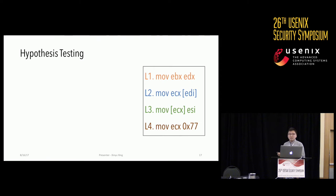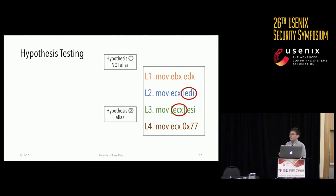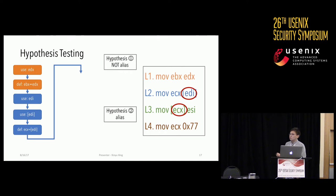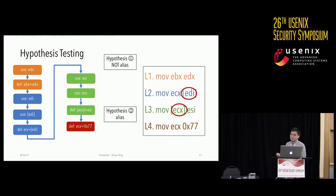Let's look at the hypothesis test in detail. We make two hypotheses about whether EDI and ECX are aliases. After building use-def chains from each instruction — extracting definitions and uses of EDX, EDI, memory cells indicated by EDI, ECX, ESI — under the first hypothesis (not aliases), the use of memory indicated by EDI can reach instruction L4 without blocking, giving us one set of constraints. Under the second hypothesis (aliases), the use of EDI is blocked by the definition of memory indicated by ECX, giving a different set of constraints.